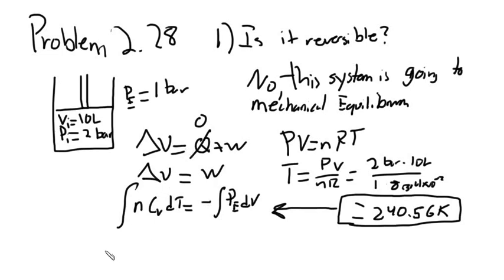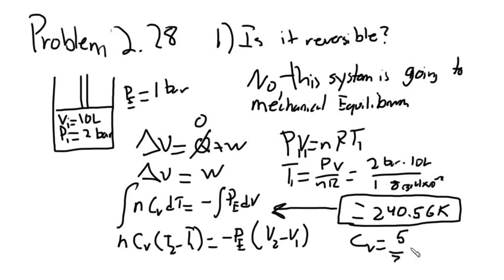Now, if we continue this equation, we get n Cv (T_2 - T_1) is equal to P_E (V_2 - V_1). We just found the initial temperature, which is here. And we have the initial volume, which is 10 liters. We have the external equilibrium pressure, which is 1 bar. And we have, from the problem statement, that for gas A, Cv is equal to 5 over 2 R.